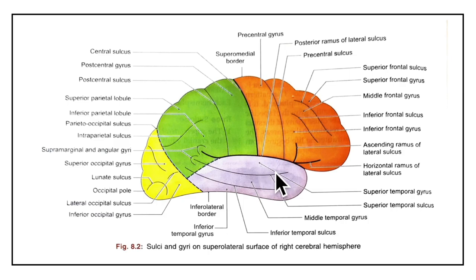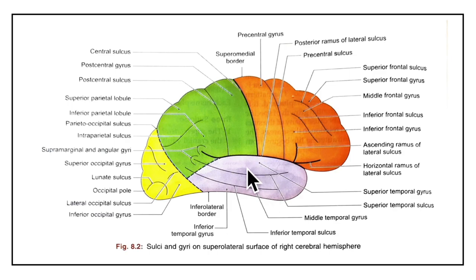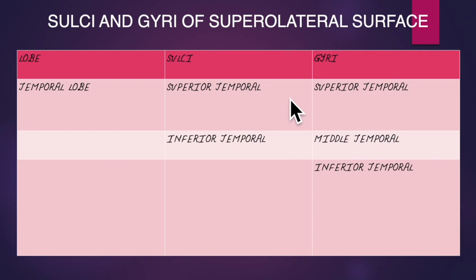Now let's learn about the sulci and gyri of the temporal lobe. We have two sulci and three gyri. The sulci are: the superior temporal sulcus and the inferior temporal sulcus. The gyri are: the superior temporal gyrus, the middle temporal gyrus and the inferior temporal gyrus. A mnemonic for the sulci is SI, and for the gyri SIM — S for superior temporal, I for inferior temporal, M for middle temporal gyrus. The superior and inferior temporal sulci divide the temporal lobe into superior, middle and inferior temporal gyri.